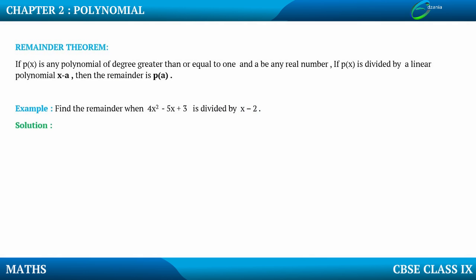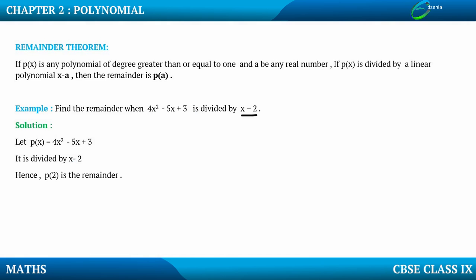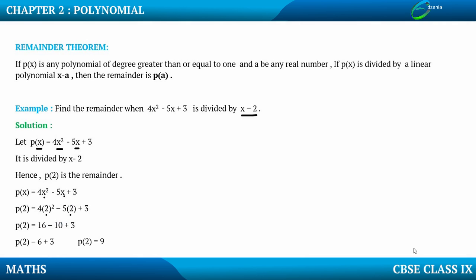Here is the solution. Let p(x) = 4x² - 5x + 3, divided by x - 2. Therefore p(2) is the remainder, meaning we substitute 2 in place of x. So p(2) = 4×2² - 5×2 + 3 = 4×4 - 10 + 3 = 16 - 10 + 3 = 6 + 3 = 9. So p(2) = 9, and 9 is the remainder when 4x² - 5x + 3 is divided by x - 2.